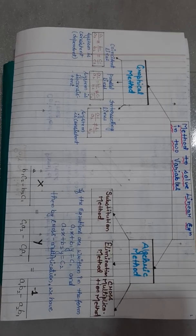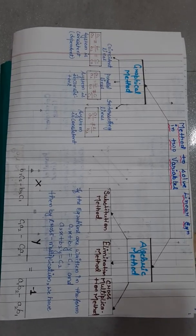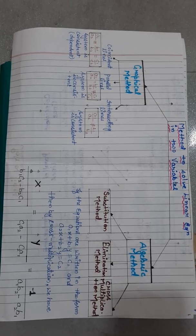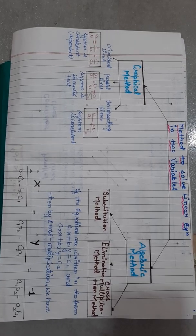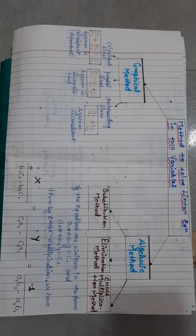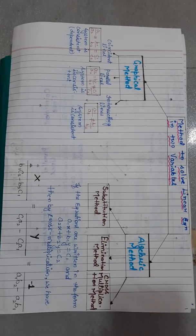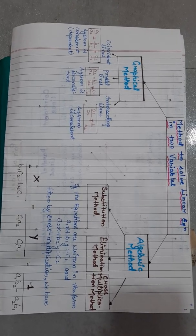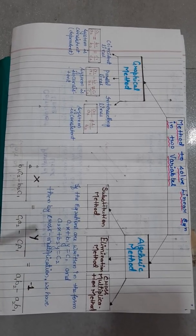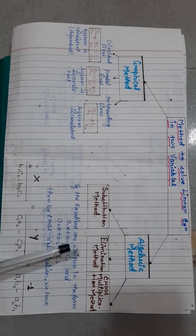Now we go to the algebraic method. In the algebraic method, there are three types: first is substitution method, second is elimination method. These two methods you have read in previous videos. Now we will discuss cross multiplication.